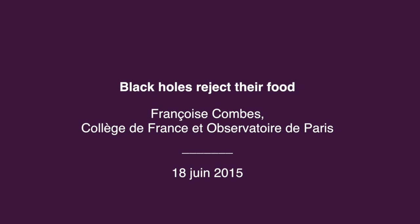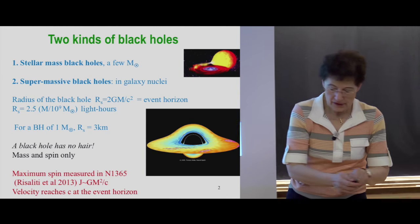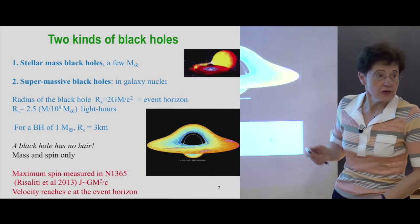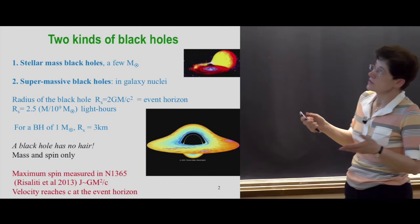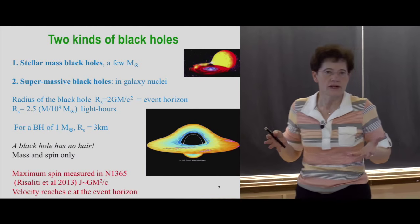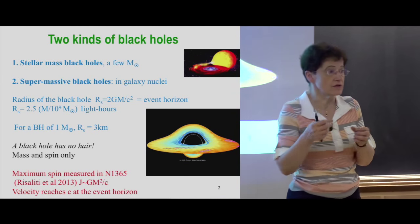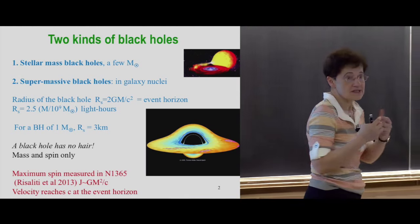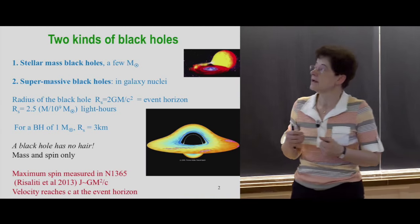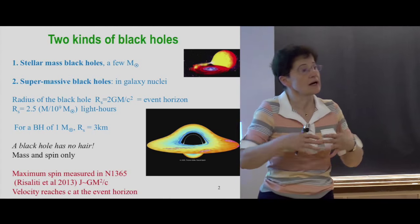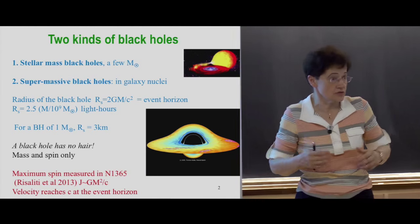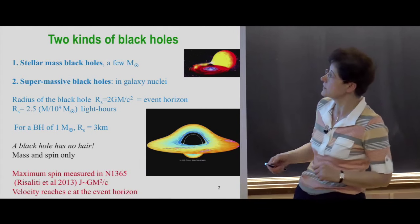We are going to talk about how black holes and galaxies accrete their mass and reject it. As an introduction, I want to tell you what kind of black holes we are talking about. The definition of a black hole is an object dense and compact enough that the gravity force is very huge, and the escape velocity is higher than the light velocity, so they are not radiating anything — and they are black. That's the name.